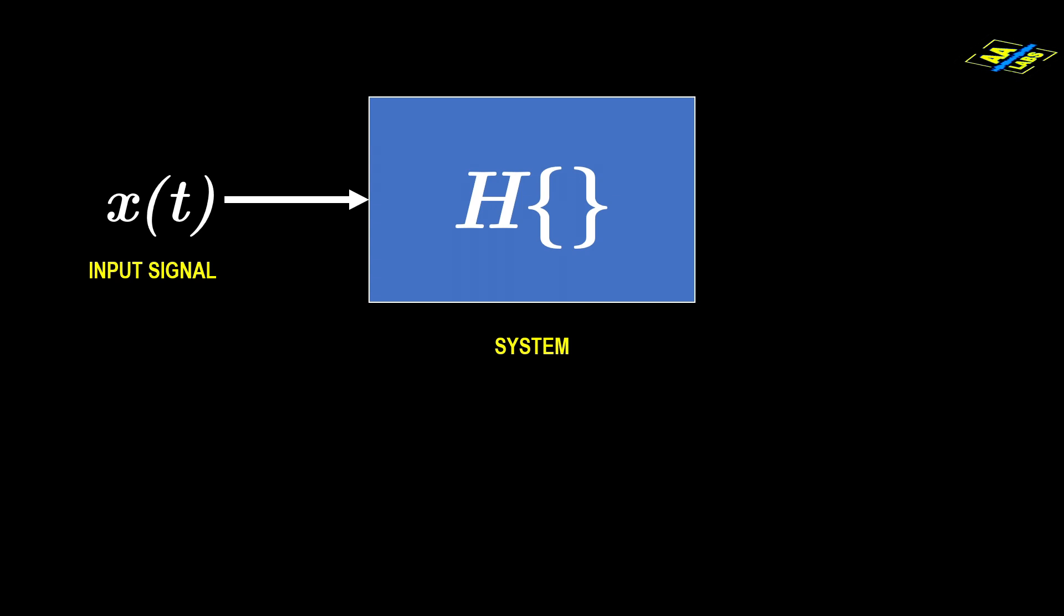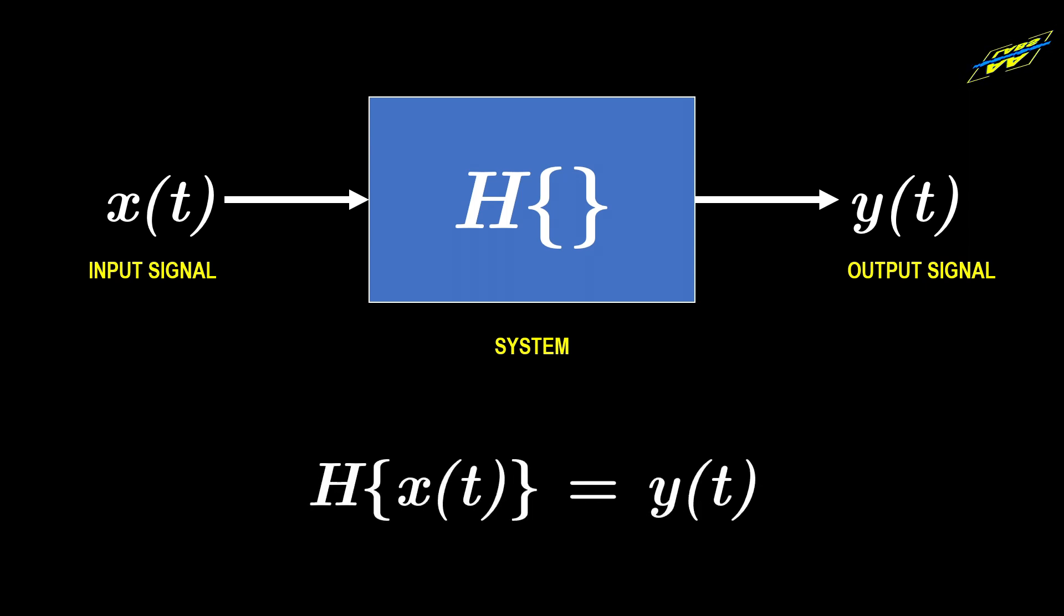For the following explanation, we will use x of t to represent the input signal, H with brackets to represent the operation the system performs on the input, and y of t to represent the output signal. Think of H as a black box that performs some manipulation on the input. So H of x of t equals y of t.